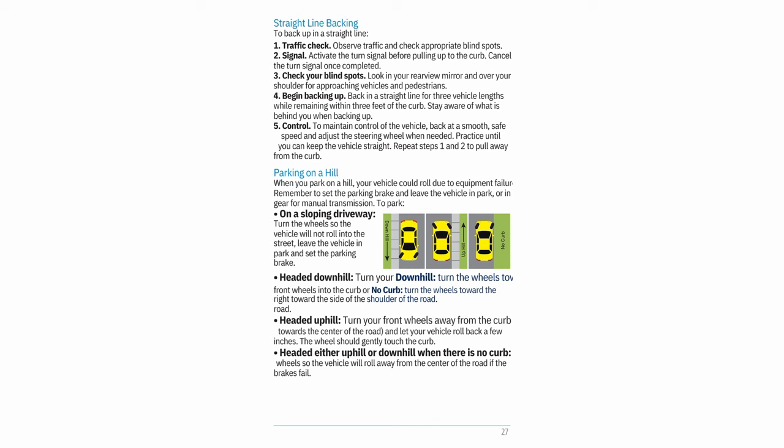Parking on a hill: Your vehicle could roll due to equipment failure — remember to set the parking brake and leave the vehicle in park (or in gear for manual transmission). On a sloping driveway: turn the wheels so the vehicle will not roll into the street. Headed downhill: turn your front wheels into the curb or toward the right side of the road. Headed uphill: turn your front wheels away from the curb (left) and let your vehicle roll back a few inches until the wheels gently touch the curb. Headed either uphill or downhill with no curb: turn the wheels so the vehicle will roll away from the center of the road if the brakes fail.